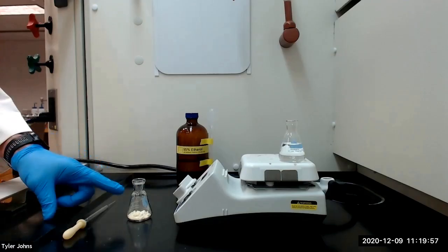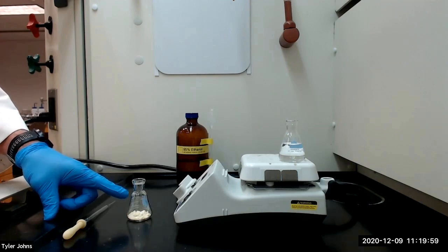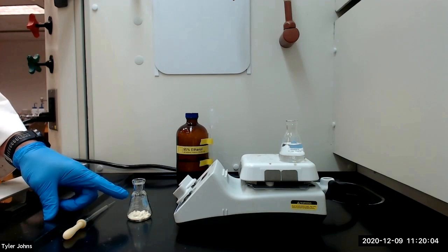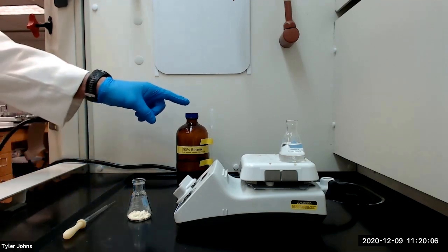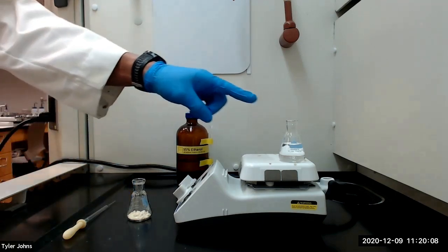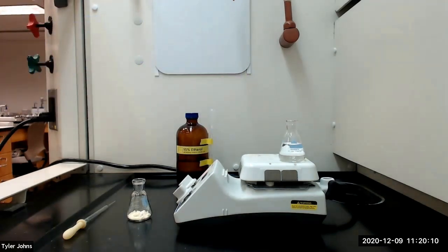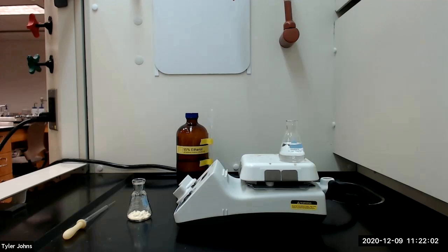I've transferred the crude benzoin to a 25 milliliter Erlenmeyer flask and we will now perform a recrystallization of the crude benzoin using boiling hot 95% ethanol as the solvent. Use the ratio of 0.8 milliliters of 95% ethanol per every 0.1 grams of crude benzoin as an estimate of how much 95% ethanol you will need for the recrystallization.